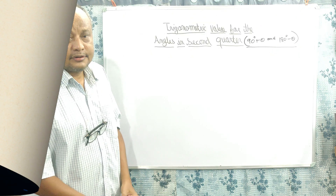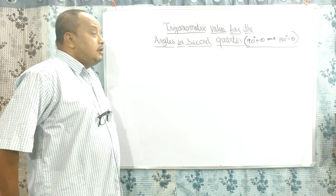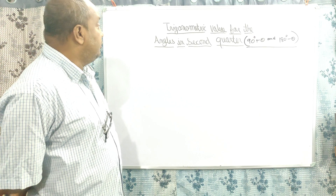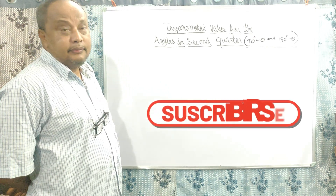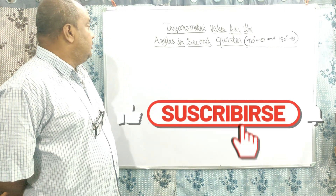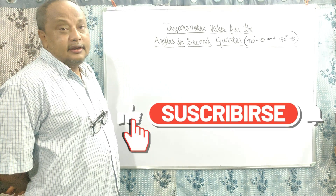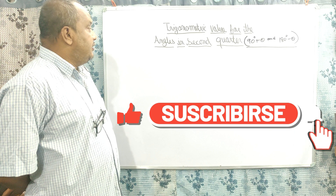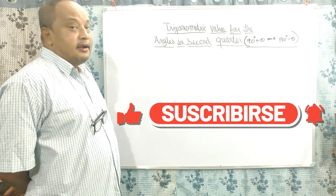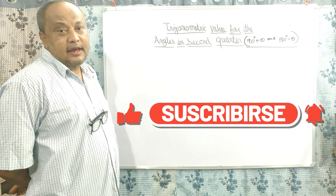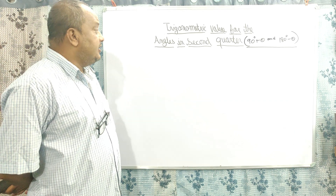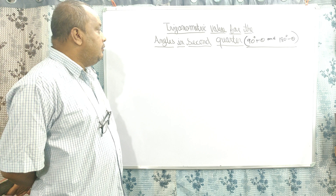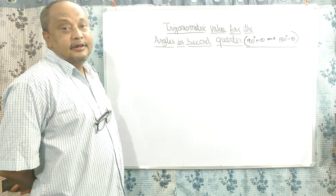Dear students, today I am going to deliver the trigonometric values for the angles in the second quadrant. That is the angle between 90 degrees and 180 degrees.